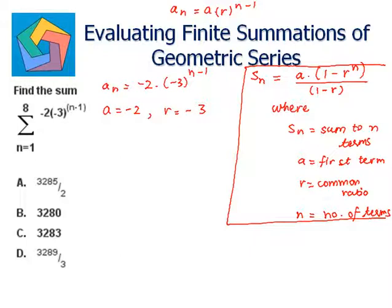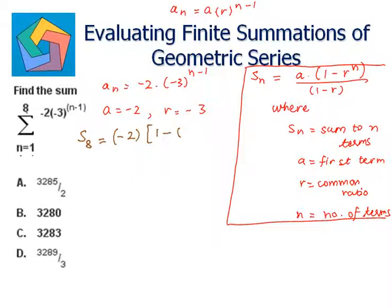Now let's put values into the formula. Since n is going from 1 till 8, we have a total of eight terms. So S_8 will be negative 2 times (1 minus (negative 3) raised to the power 8) divided by (1 minus negative 3).